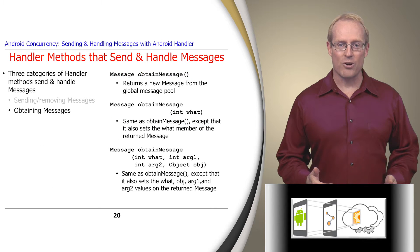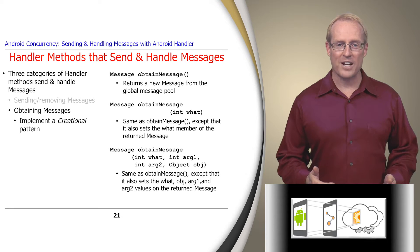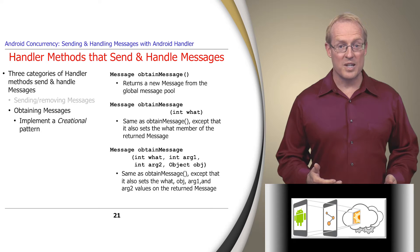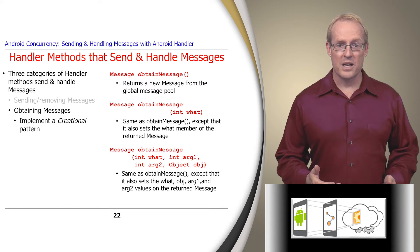A second category of handler methods create messages that are passed to sendMessage. These obtainMessage methods are factories that allocate a message from the global message pool, setting various fields of the message as designated by their parameters, in accordance with creational patterns described at this link. There are many obtainMessage methods, some of which are highlighted on this slide.